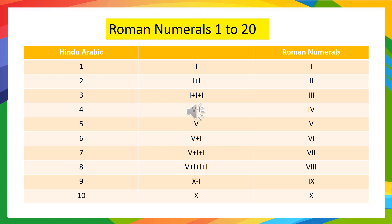6 means 5 plus 1, so we write it as VI. 7 means 5 plus 1 plus 1, so we write it as VII. 8 means 5 plus 1 plus 1 plus 1, so we write it as VIII. 9 is written as IX — again, you can observe rule 3 in this. 10 is written as X.